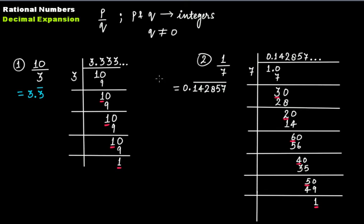Notice that only one digit is repeating in the quotient. The count of repeating digits is one, and this one is actually less than the divisor three. So the count of digits in the repeating remainders is one, which is less than three.